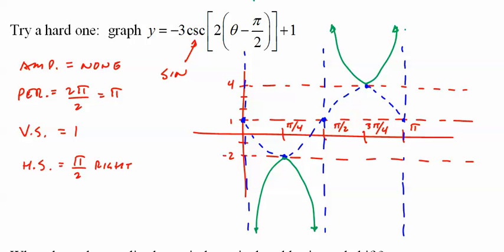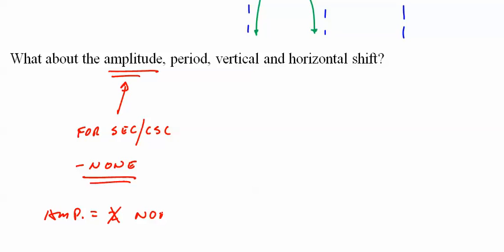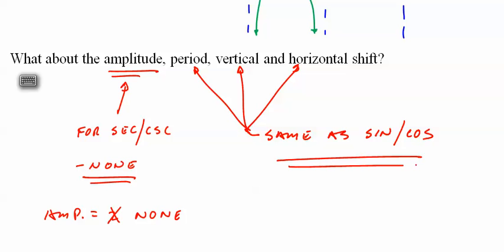Secant and cosecant are challenging. They're an extra layer over what are very challenging problems to begin with, but they're not earth-shatteringly different. They really aren't. So as I said, the amplitude for secant and cosecant: none. If you are more comfortable writing like I did on the first one, amplitude is 2 and then coming back later and writing none, it's not a bad idea. It can help you to graph it properly. These are all the same, no change.